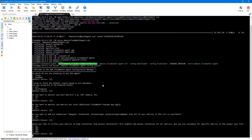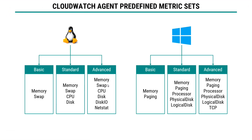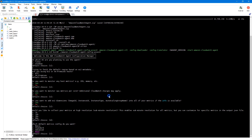Next, we specify the frequency of metric collection. For this demo, I'll say 30 seconds, which is option three. Then comes the metric category — we have three: Basic, Standard, and Advanced for each operating system. For Basic, we get memory and swap metrics. For Standard, we additionally get CPU and disk metrics. For Advanced, we get disk IO and netstat metrics. Similarly for Windows, Basic gives memory and paging; Standard adds processor, physical disk, and logical disk; Advanced adds TCP metrics. For this demo, I'll go with Standard — option two. This is the preview of the JSON file it creates; you can verify and say yes to create it. I'll select option one.